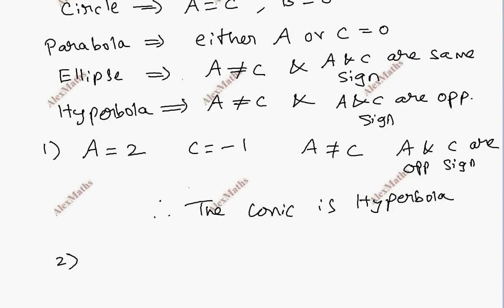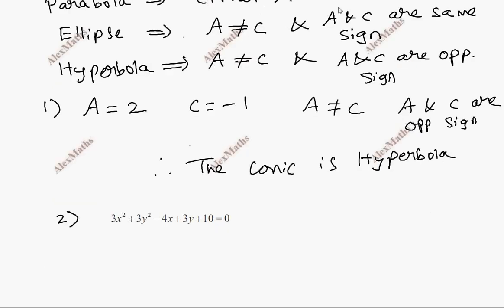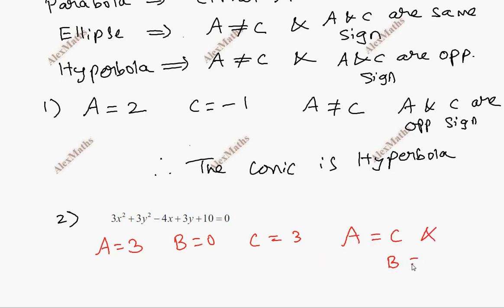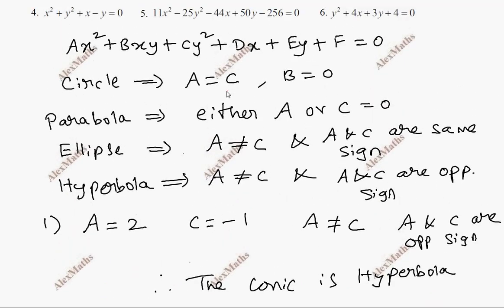Question number 2: looking at the condition, A and C are equal and B is equal to 0. Looking at the condition where A and C are equal, therefore the conic is a circle.